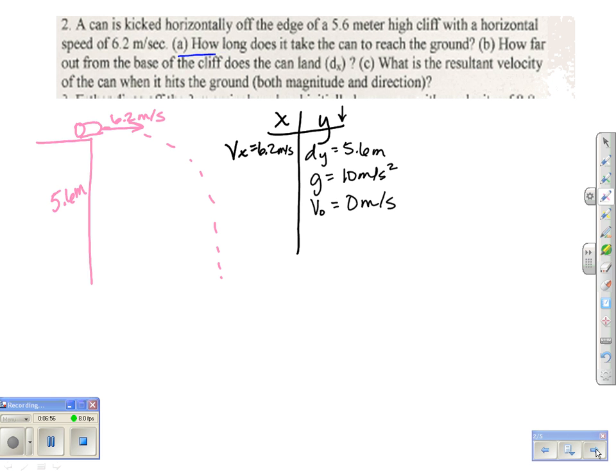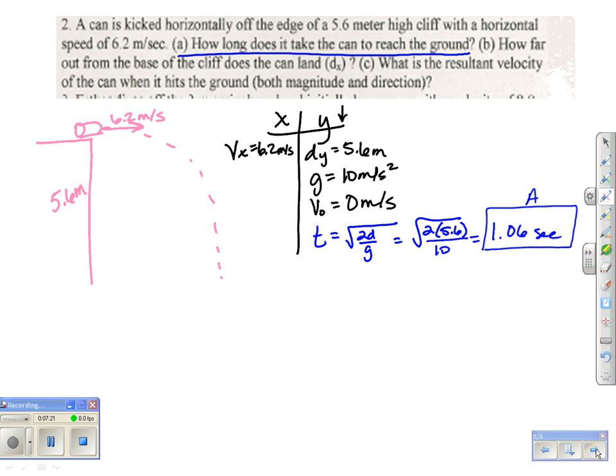The first thing they want me to find is how long does it take to reach the ground. Well, that's a time. I have more information on the y side, so I'm going to start with it. I can do the square root of 2d over g to find time. So the square root of 2 times 5.6 divided by 10 will equal 1.06 seconds. And that's my a part.